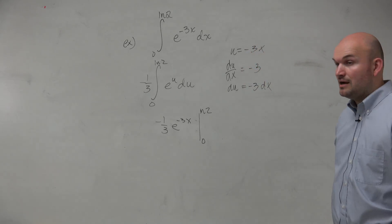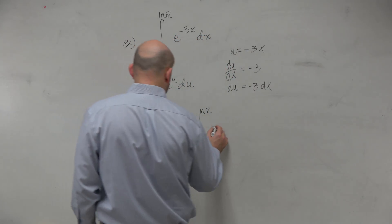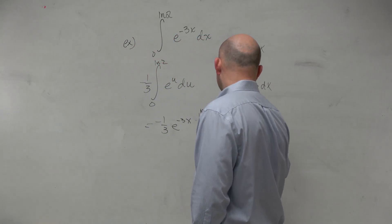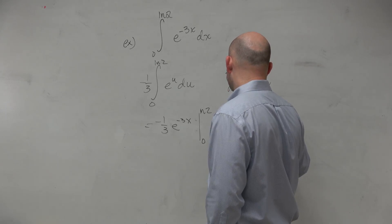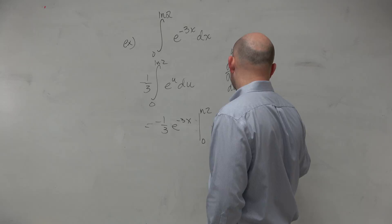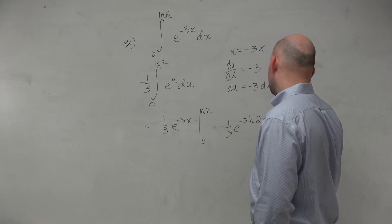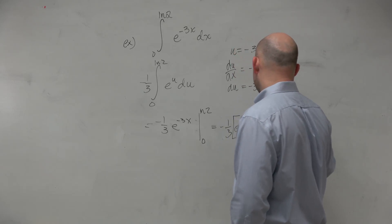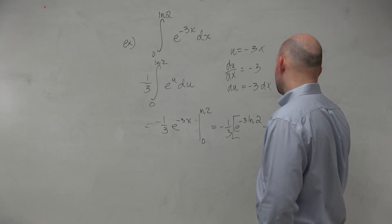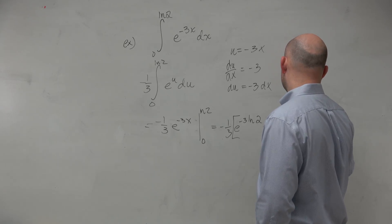OK, so now to go ahead and evaluate that, I can have negative 1/3 e to the negative 3 times ln of 2 minus, you could distribute this, but let's just leave this on the outside, times the e to the negative 3 times 0.